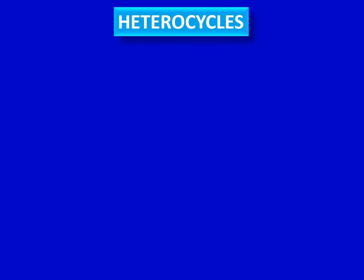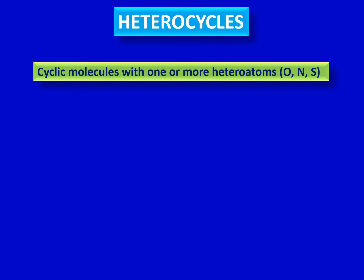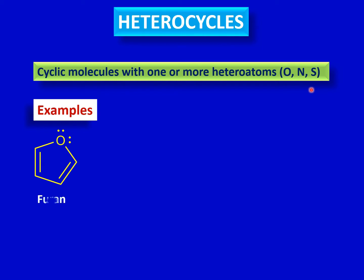First, let's see what heterocycles mean. These are molecules that have a cyclic structure and one or more heteroatoms such as oxygen, nitrogen, or sulfur may be present in that ring. Some examples of these heterocyclic molecules are furan — and I'll tell you about only those examples in which resonance is possible, since resonance is not possible in all heterocyclic molecules, only those with a particular structural feature.